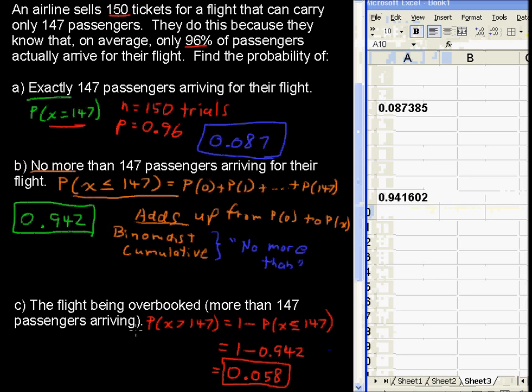So, that is the probability that the flight is overbooked. Well, that actually sounds about right. If you've ever been bumped on a flight, that sounds about right. They overbook, and then they offer coupons if you will take the next flight. Alright, there it is, an example of the binomial probability distribution.